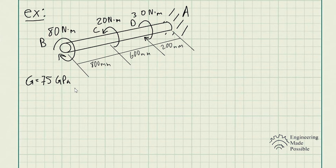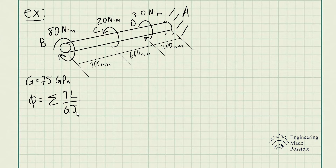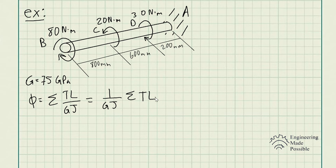The equation we're going to use for the angle of twist is the sum of the torque times the length divided by the shear modulus and the polar moment of inertia, applied at every specific point along the shaft where a torque acts. Since the shear modulus and polar moment of inertia are the same throughout all locations B, C, and D, we can factor them out: 1 divided by GJ, times the sum of the torques times their lengths.